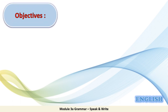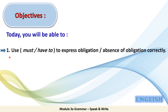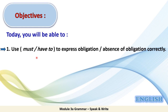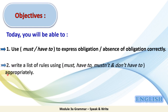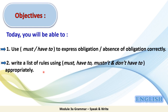Let's now have a look at the objectives of today's lesson. Today you will be able to: 1. Use must and have to to express obligation and absence of obligation correctly. 2. Write a list of rules using must, have to, mustn't, and don't have to appropriately.